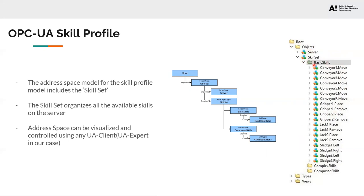Here we see the skill set has various folders such as basic skills, complex skills, and composed skills. Basic skills are listed such as conveyor move, gripper place, and gripper remove. Conveyor 1 move signifies that conveyor 1 has to be started, which is a basic skill. Similarly, placing a workpiece on the conveyor from the gripper can be given as a basic skill: gripper one place.